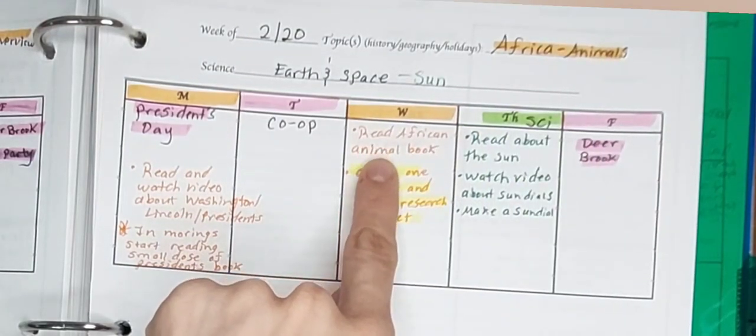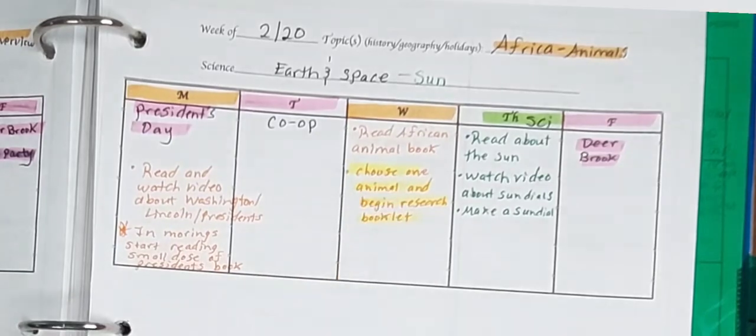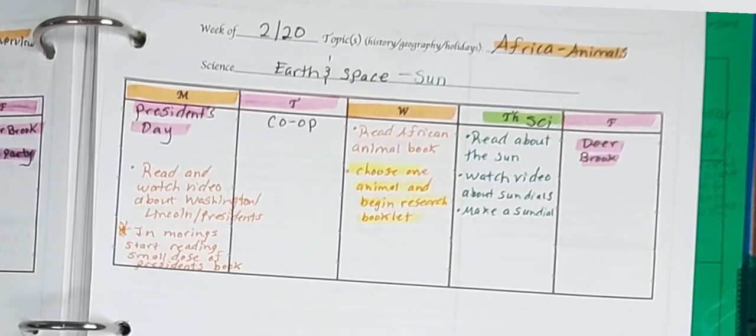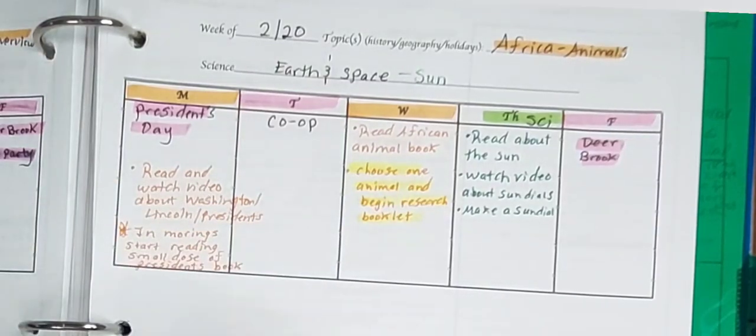So we're going to read a general book about African animals. And we're going to choose, he's going to choose one to focus on and do a little animal research booklet I made for him to complete. And then he does some writing about that. That will probably continue into this week since it normally takes more time.